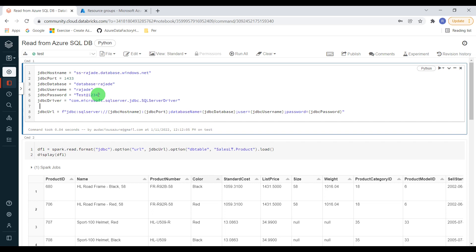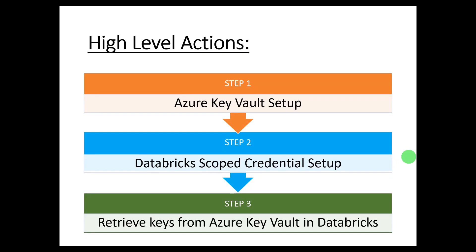Instead of hard coding directly, we can save the credentials in Azure Key Vault and retrieve them whenever needed. In this tutorial I am going to show you how to create Azure Key Vault and how to leverage it for retrieving passwords or any sensitive credentials. This demo will have three high-level steps: step one, create Azure Key Vault and some secrets; step two, create a Databricks scoped credential; and step three, write PySpark code to retrieve the keys using that scoped credential.